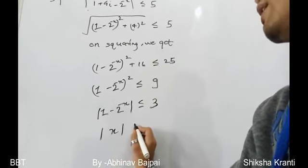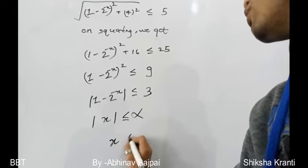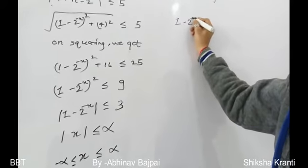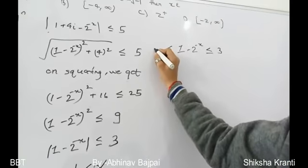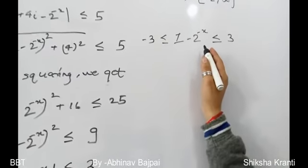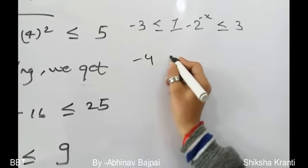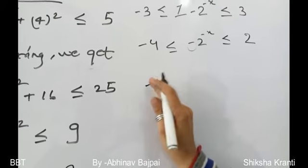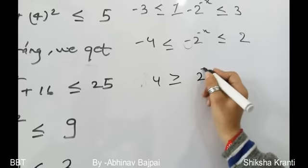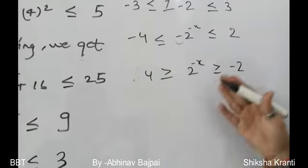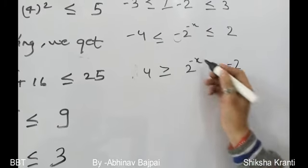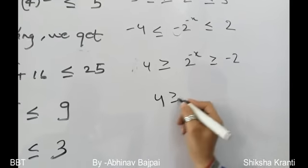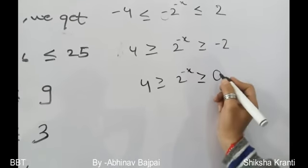Using the inequality |expression| ≤ α means -α ≤ expression ≤ α: we get -3 ≤ 1 - 2^(-x) ≤ 3, so -4 ≤ -2^(-x) ≤ 2, giving -2 ≤ 2^(-x) ≤ 4. Since a^(any power) > 0 for a > 0, we restrict to 0 < 2^(-x) ≤ 4.